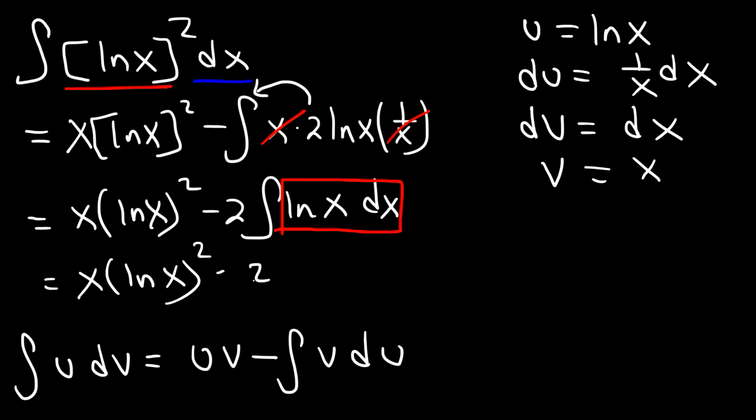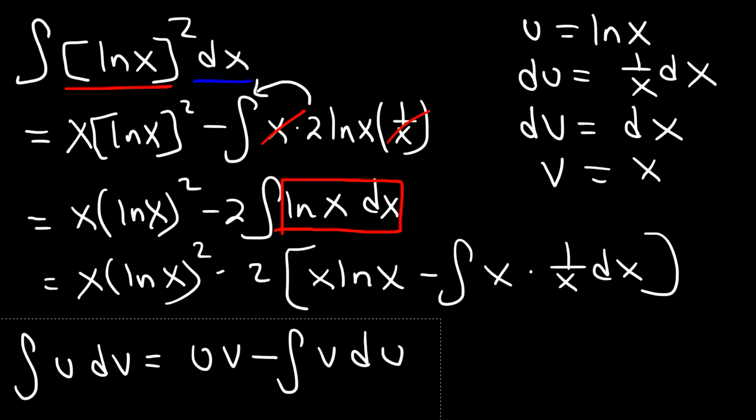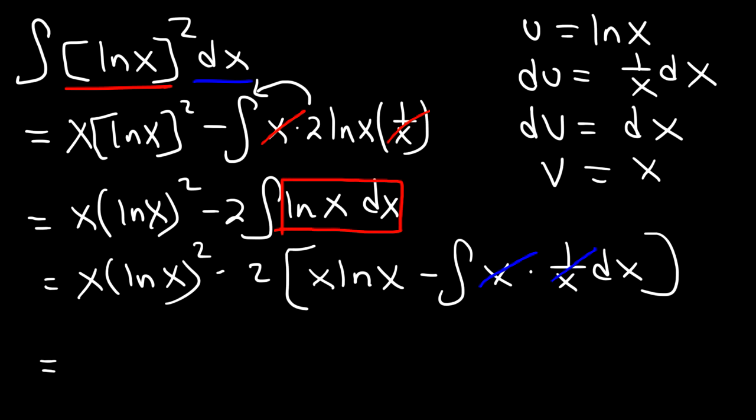So this is going to be u times v. So that's ln x times x or x ln x minus the integral of v du. v is x. Du is 1 over x dx. So we can cancel x and 1 over x. That's going to become 1.